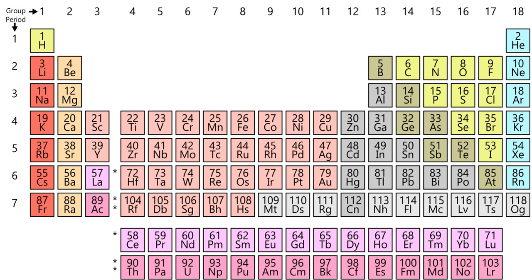The nonmetals are divided into two categories reflecting their relative propensity to form chemical compounds: namely reactive nonmetals and noble gases. The reactive nonmetals vary in nonmetallic character. The less electronegative of them, such as carbon and sulfur, mostly have weak to moderately strong nonmetallic properties and tend to form covalent compounds with metals. The more electronegative reactive nonmetals, such as oxygen and fluorine, are characterized by stronger nonmetallic properties and a tendency to form predominantly ionic compounds with metals. The noble gases are distinguished by their great reluctance to form compounds with other elements.